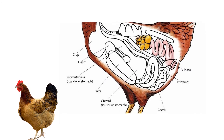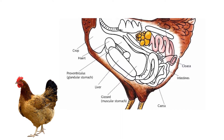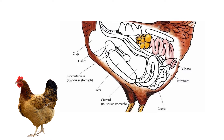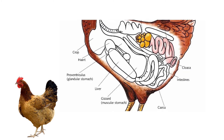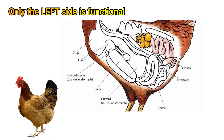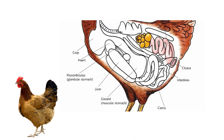The female reproductive system in the domestic fowl consists of the ovary and accompanying oviduct. While the female embryo in chicken has two sets of reproductive organs, only one of these, the left side, survives and reaches maturity to produce eggs.